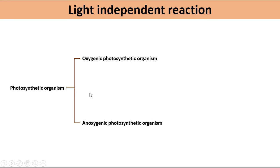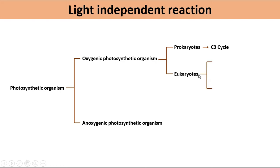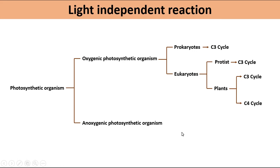Oxygenic photosynthetic organisms can be prokaryotes and eukaryotes. In prokaryotes, the C3 cycle occurs. Photosynthetic eukaryotes can be protists and plants. In protists, C3 occurs. In plants, C3 and C4 can be involved in CO2 fixation. Anoxygenic photosynthetic organisms are always prokaryotes, in which the C3 cycle occurs.